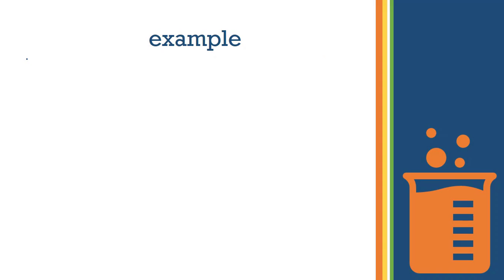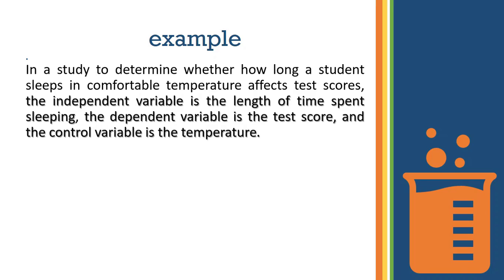For more understanding about these variables, I'm going to take an example. In a study to determine whether how long a student sleeps in a comfortable temperature affects test scores, the independent variable is the length of time spent sleeping, the dependent variable is the test score, and the control variable is the temperature.